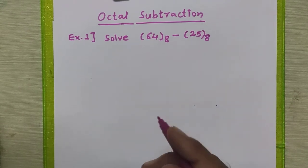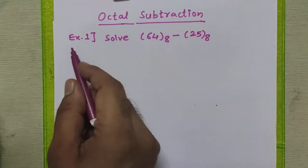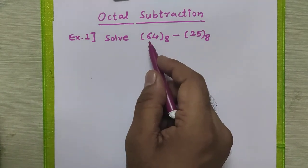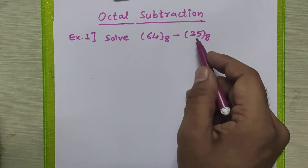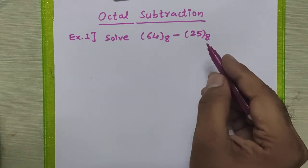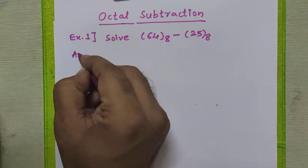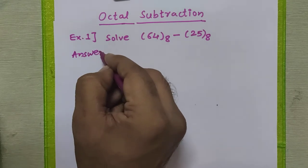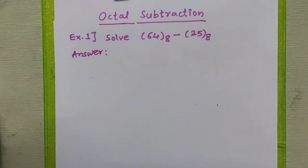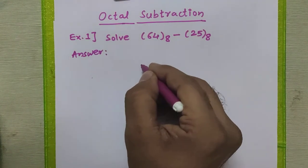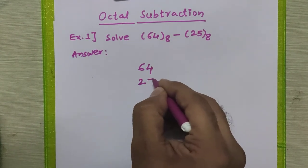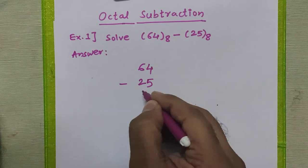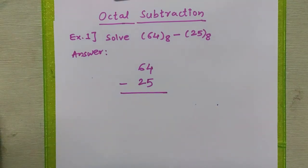We will see the first example: subtracting 64 in octal minus 25 in octal. We will write the numbers given to us — 64 in octal and 25 in octal — and perform the subtraction directly without converting to any other base.